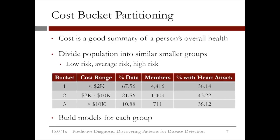We did not want to have too many cost bins because of the size of the dataset. The table in the slide gives a summary of the cost bucket partitions. Patients with expenses over $10,000 in the nine-month period were allocated to cost bucket 3, patients with less than $2,000 in expenses were allocated to cost bucket 1, and the remaining patients with costs between $2,000 and $10,000 to cost bucket 2. The majority of patients — 4,400 out of 6,500, or 67.5% of all patients — fell into the first bucket of low expenses.